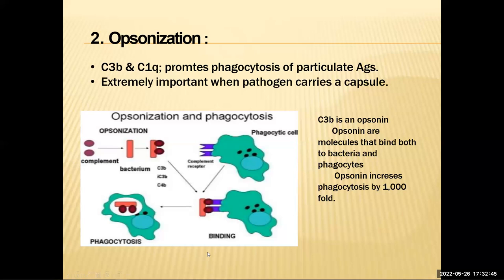Why must destruction take place within a vesicle? Because the lytic enzymes from the lysosome are indiscriminate — if released within the cytoplasm, they would kill the host cell itself. There is a time when a cell does want to kill itself, known as programmed cell death or apoptosis. Apoptosis occurs when the cell is overwhelmed, or during fetal development — for example, the formation of digits. Initially the hand looks like a ping-pong paddle; a signal is sent to the cells between the fingers to destroy themselves, forming individual digits.